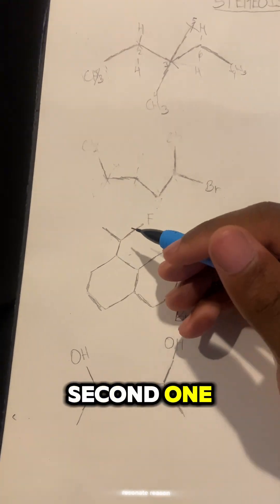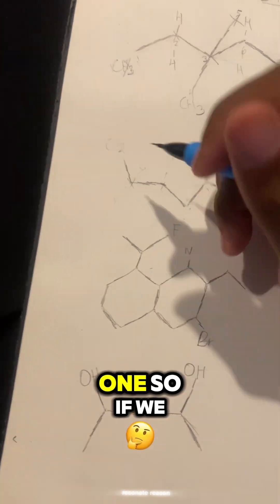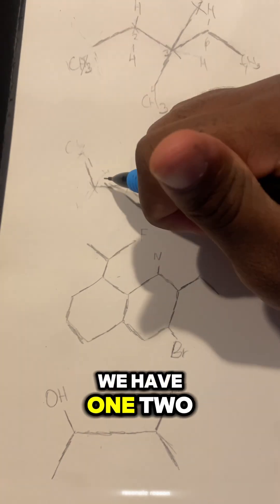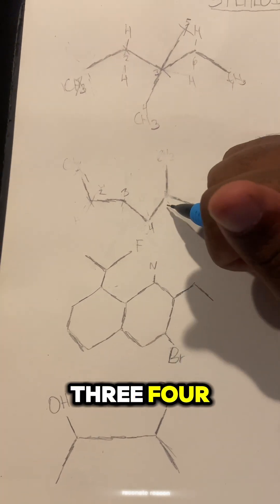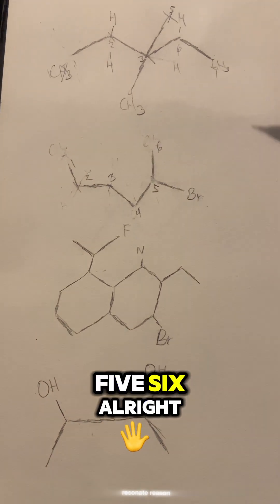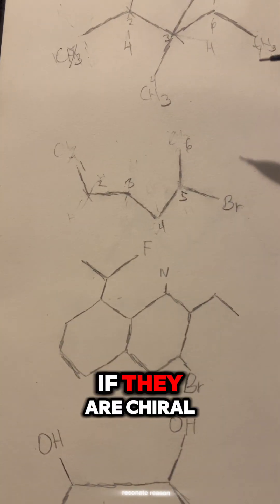Alright, now let's go to the second one. It's going to be easy just like the first one. So if we start with the carbon right here, we have 1, 2, 3, 4, 5, 6. Alright, now let's find out if they're achiral or not.